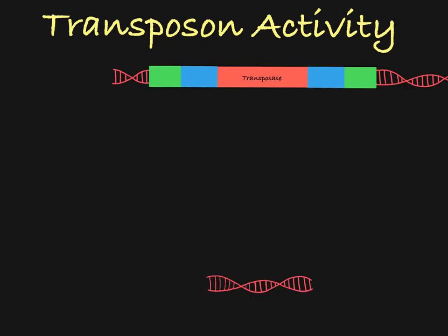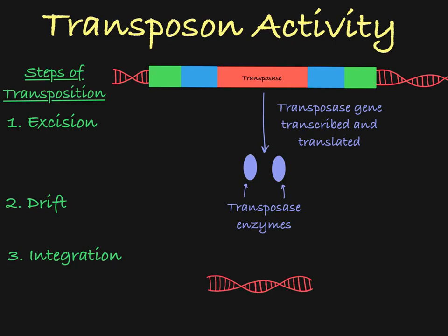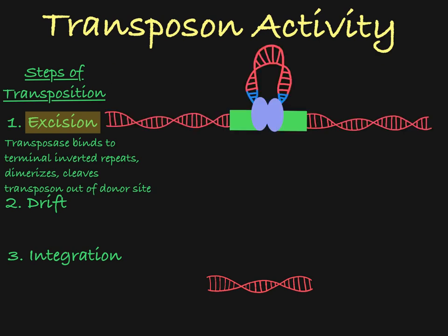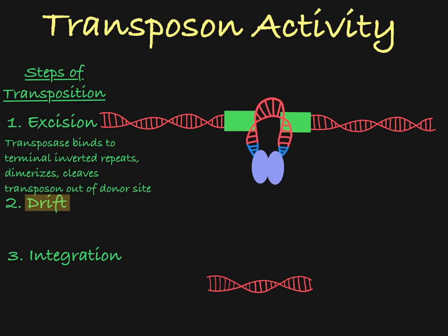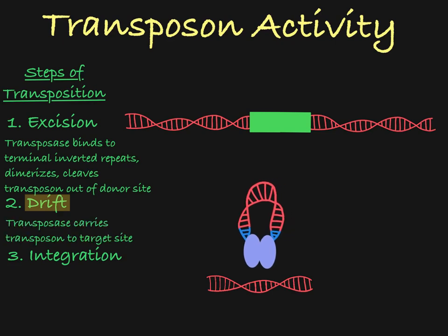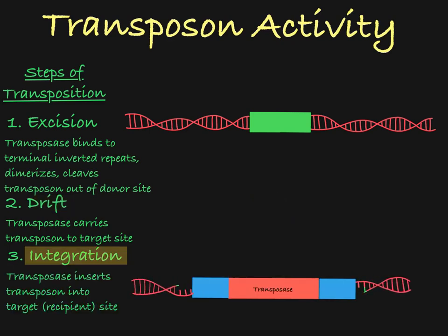So let's break transposition of class II transposons into three steps: excision, drift, and integration. For transposition to occur, transposase enzyme needs to be transcribed and translated from its encoding gene in the transposon. These enzymes will bind to the terminal inverted repeats, dimerize, and cleave the DNA transposon out of the donor site. The cleaved ends will be repaired by the cell. The transposase will then take the transposon to another part of the DNA, cleave the DNA, insert the transposon, and allow DNA ligase to attach the transposon to the newly cleaved DNA at the recipient site.